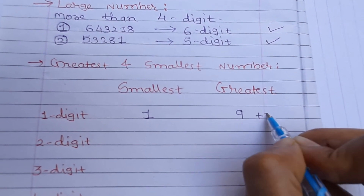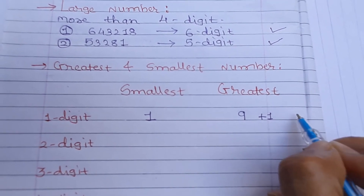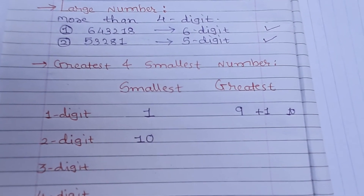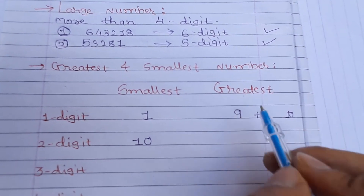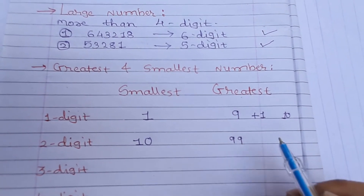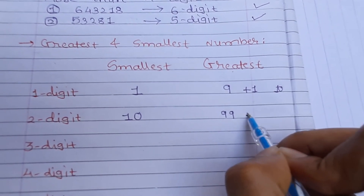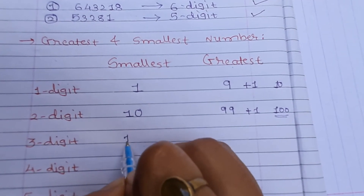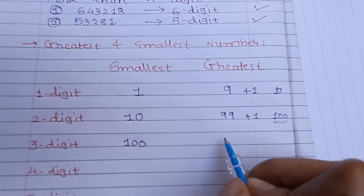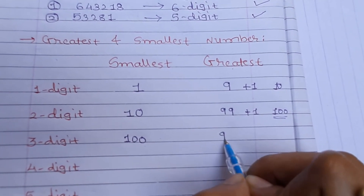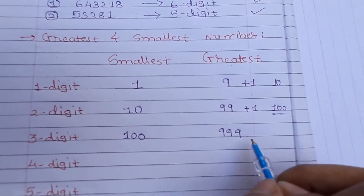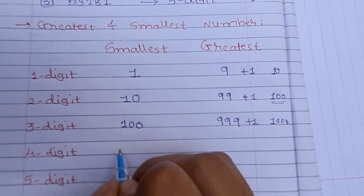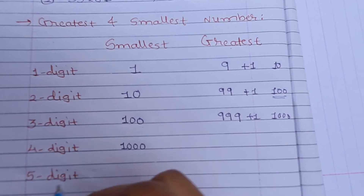If I add 1 to the greatest one-digit number: 9 plus 1 gives 10, the smallest two-digit number. And 99 plus 1 gives 100, the smallest three-digit number. The greatest three-digit number is 999, and 999 plus 1 gives 1000, which becomes the smallest four-digit number.